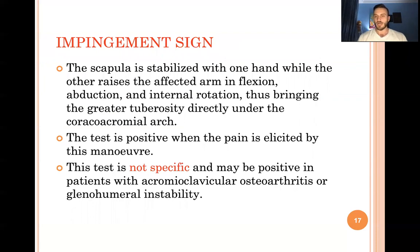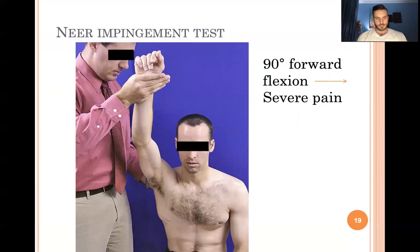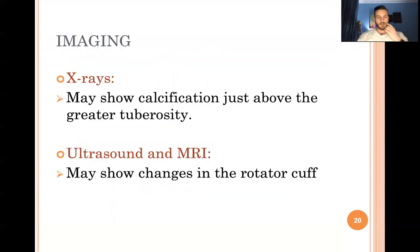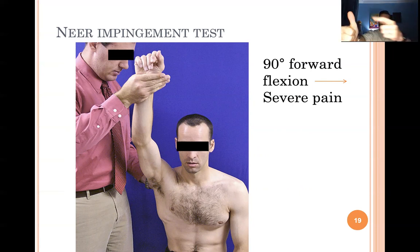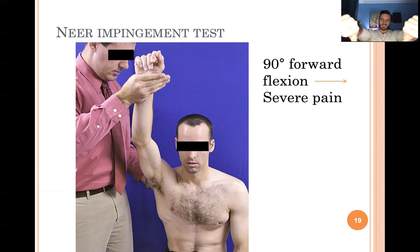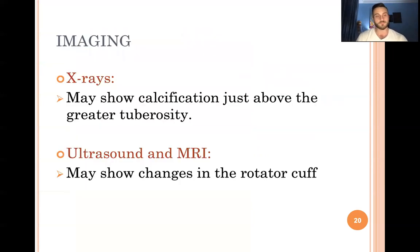To test for impingement: the impingement sign involves flexion, abduction, and internal rotation, reproducing the pain. Another test involves forward flexion of the elbow causing severe pain. The empty can test positions the patient in full flexion and abduction with slight scapular plane positioning, thumbs pointing upward, then the patient 'empties the can' by performing internal rotation. Resisted flexion against the examiner pushing down elicits the pain, confirming impingement.